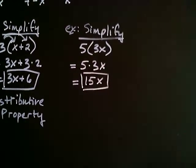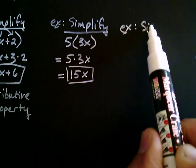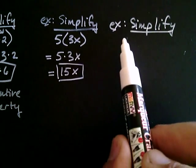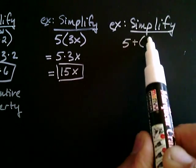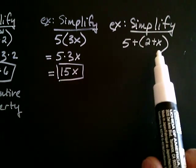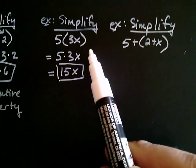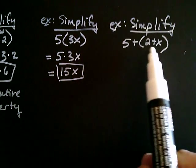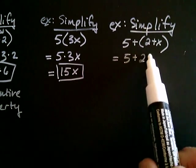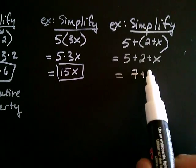Let's see that same property work when we have addition. For example, we can simplify five plus (two plus x). We're in the same bind because I don't know what the value of x is, so how can I possibly add it to two before adding that to five? But as mentioned, whenever it's all multiplication or all addition, you can simply drop the parentheses. When I do so I get five plus two plus x, and now I can add the five and the two together to get seven plus x. And that would be my answer.